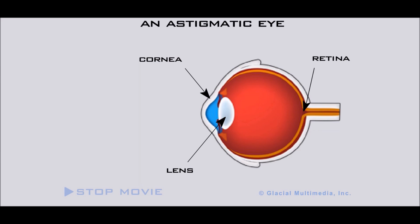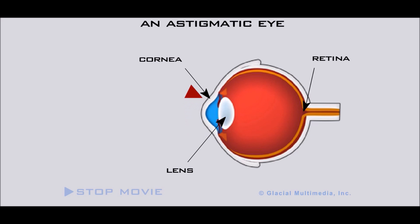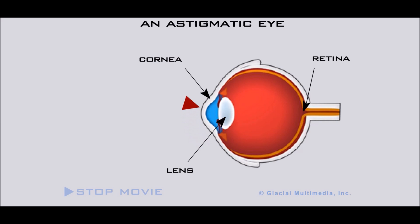With astigmatism, the cornea is not a perfect sphere, like a basketball, but is steeper in one direction and flatter in the other, like a football.